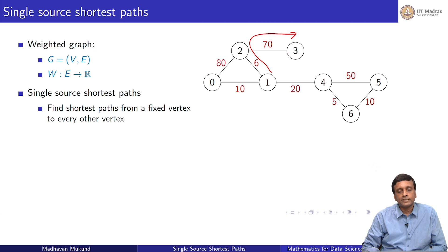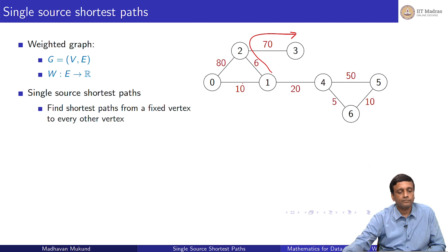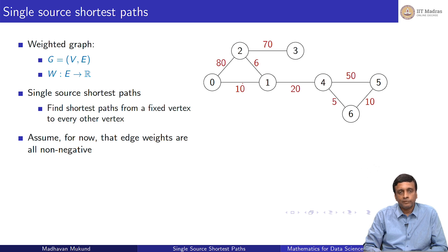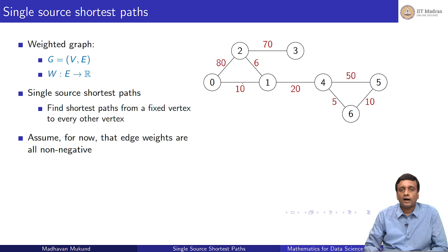We want to find some source vertex, start from there, and find the shortest path to every other vertex in the graph. To solve this, we first assume that edge weights are all non-negative — we could have 0 weights but not negative weights. Otherwise the algorithm we are going to look at will not work, and we will also explain why.